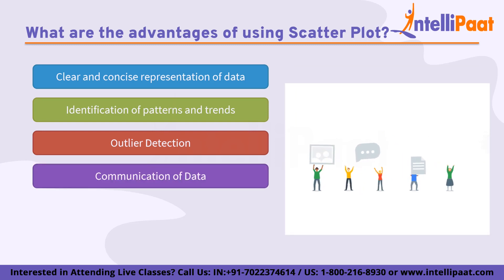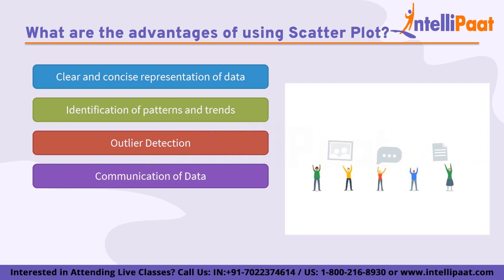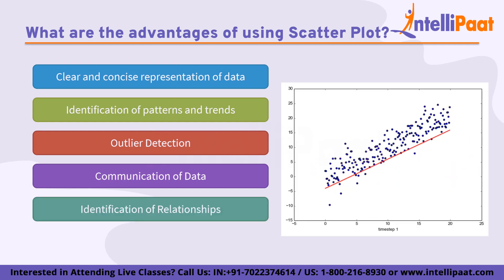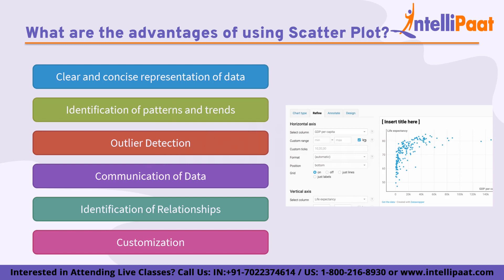Fourth is communication of data — scatter plots are an effective way of communicating data to others, providing a visual representation that is easy to understand and interpret. Fifth is identification of relationships — scatter plots can help in identifying relationships between two variables, which is particularly useful in fields such as healthcare or social sciences where identifying correlations can help us understand the causes and effects of certain phenomena. Finally, customization — scatter plots can be customized to suit different needs; for example, different colors or symbols can be used to differentiate between different groups or categories of data.